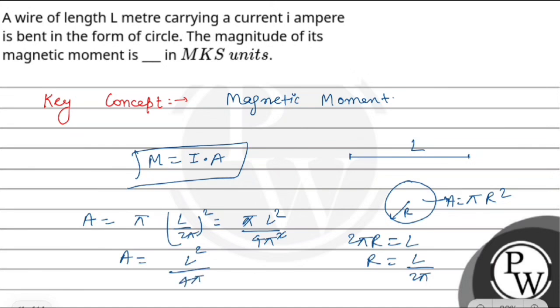Now we can write the magnetic moment: M = I × A = I × L²/(4π). So this is our magnetic moment.